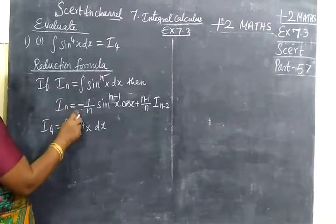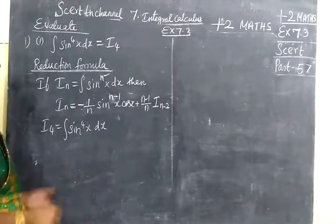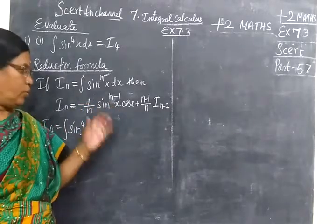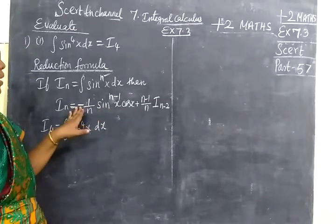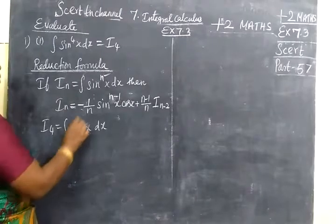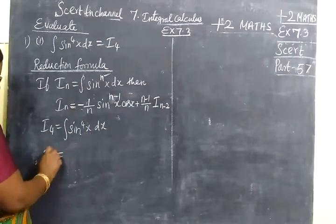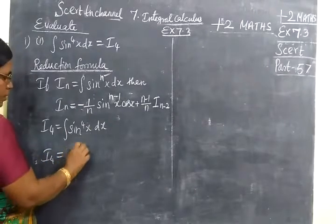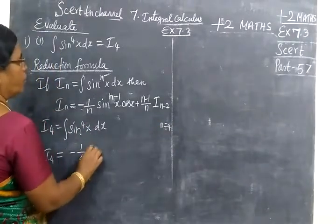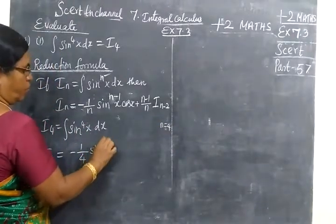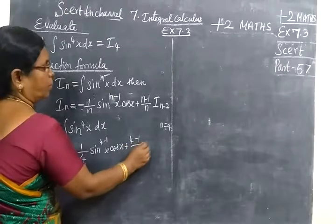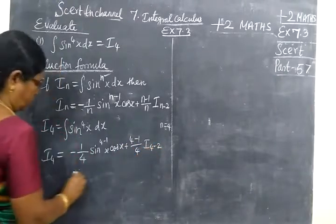For cos, minus becomes plus. Usually we are using: for sin, sin is minus; for cos, cos is plus. So that means we are using I₄. Sin is minus, cos means plus. So cos is plus, 4 minus 1 by 4, I₄ minus 2.